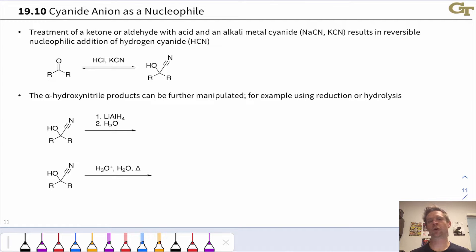Cyanide anion is an important carbon nucleophile that can add to ketones and aldehydes. It's not really part of an organometallic reagent per se, but we do find it in ionic salts such as sodium cyanide or potassium cyanide.